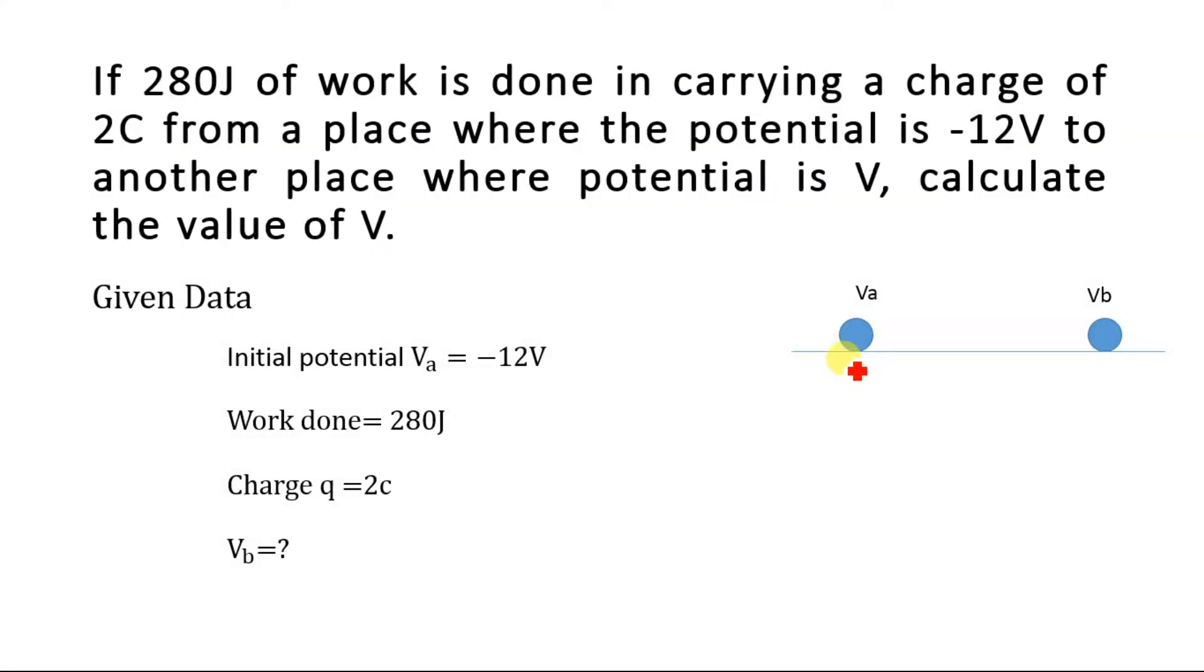This is the initial location of the 2 coulombs charge and this is the final location. At the initial position the potential VA is equal to minus 12 volts, while at the final position the potential is V, and we are going to calculate the potential at this final position.